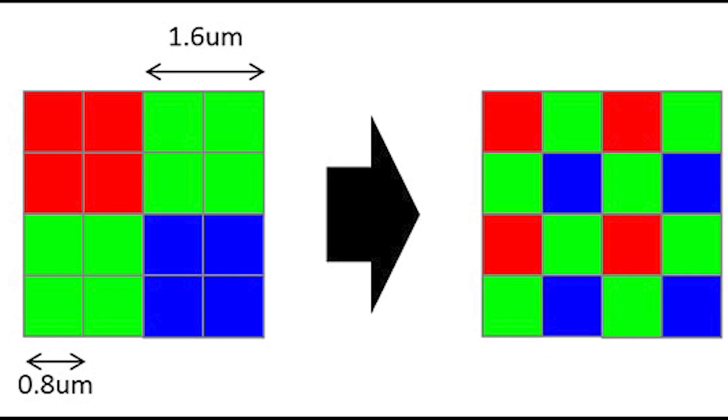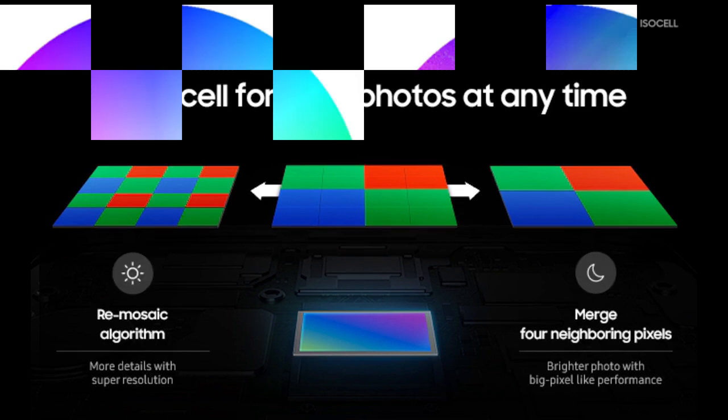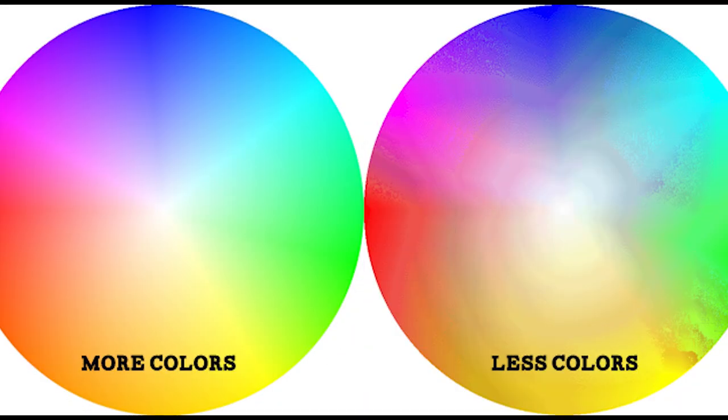0.8 micrometer refers to the pixel size. We have already spoken about pixels and megapixels, but this particular specification refers to the physical size of each pixel on the sensor. Pixel size is one of the important things to look out for when buying a new phone for its camera. A sensor with larger pixels is more desirable because the bigger the pixels are, the more likely you are to get great picture quality from that camera.